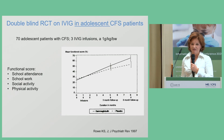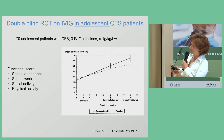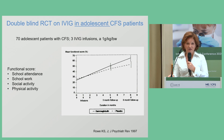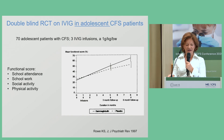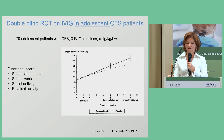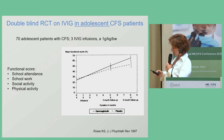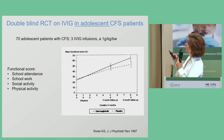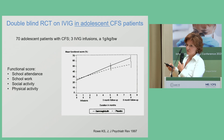Another study from 1997 looked at the effect of IgG in young patients aged 12 to 18 years old. They applied one gram per kilogram body weight in three infusions, then assessed functional performance, school attendance, schoolwork, social activity, and physical activity. Already at three-month follow-up, patients demonstrated significant improvement in functional scores, which was even better at six-month follow-up.